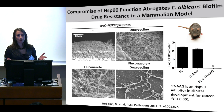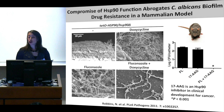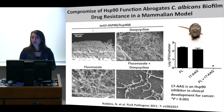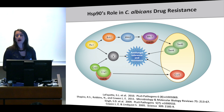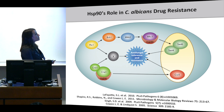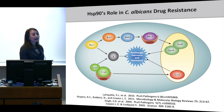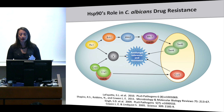For systemic applications we think we'll need a more selective agent. We've done a lot of work to explore the circuitry through which Hsp90 regulates drug resistance, including through calcineurin and the terminal MAP kinase of the cell wall integrity pathway — MKC1 in C. albicans or MPK1 in Cryptococcus neoformans.